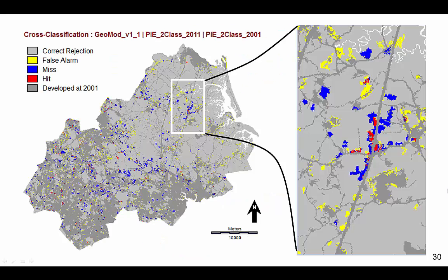To compare the simulated change to the reference change from 2001 to 2011, we overlay three maps: the simulated land cover at 2011, the reference land cover at 2011, and the reference land cover at 2001. Light gray indicates correct rejections, meaning pixels where land remains undeveloped according to both reference information and the simulation. Yellow indicates false alarms, meaning pixels where GEOMOD simulates change but the reference information shows persistence. Blue indicates misses, meaning areas where GEOMOD simulates persistence but the reference information shows change. Red indicates hits, meaning places where GEOMOD simulates change correctly. Dark gray indicates areas that were already developed at 2001 and thus are not eligible to transition to developed during the simulation.